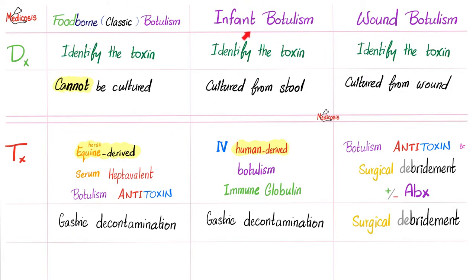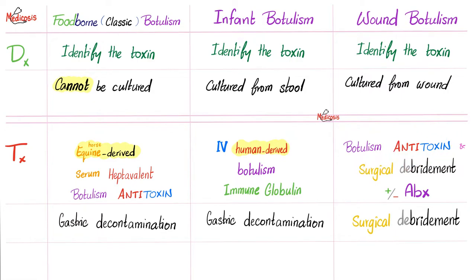Comparing diagnosis and treatment across types: food-borne botulism — identify the toxin (culturing is not practical); treatment is horse-derived antitoxin and gastric decontamination. Infant botulism — identify the toxin and culture the stool sample; treatment is IV human-derived botulism immunoglobulin and gastric decontamination. Wound botulism — identify the toxin and culture the wound; treatment is antitoxin, possible antibiotics, and surgical debridement. If a sample is contaminated with other bacteria, heat it slightly to eliminate competing bacteria without destroying everything.